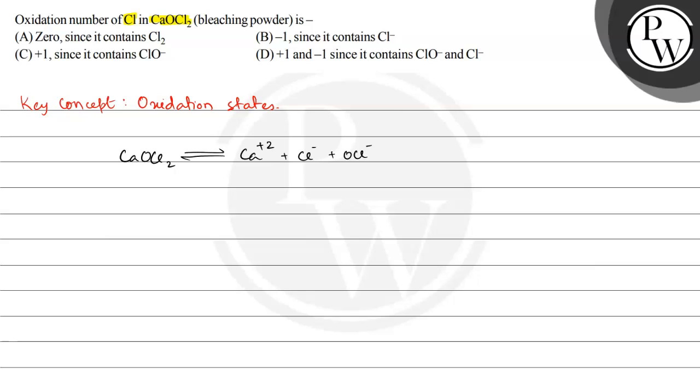For Cl- we can see the oxidation state of chlorine is -1. In OCl-, the oxidation state of chlorine we have to calculate. So let us say the oxidation state of chlorine is x.